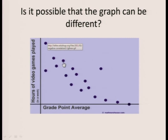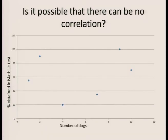Is it possible that there can be no correlation? Yes, it is possible that there can be no correlation. In this example I've got here for you, I'm showing for you the percentage that was obtained by learners in a math test, and I'm correlating it with the number of dogs that that person is in fact owing. Here you can see a person owing four dogs getting 20% for the mathlet test.